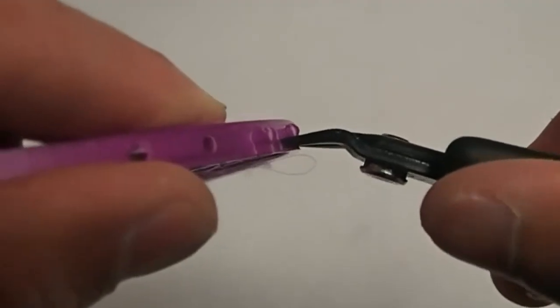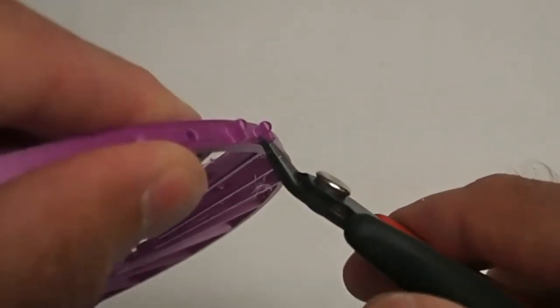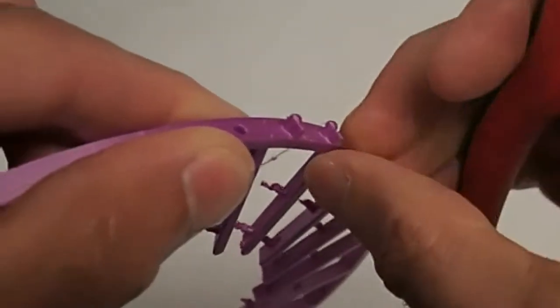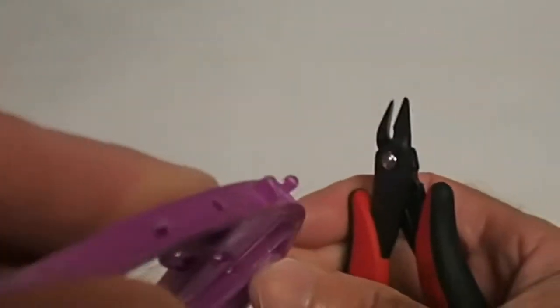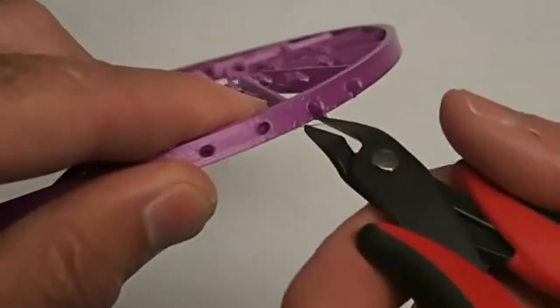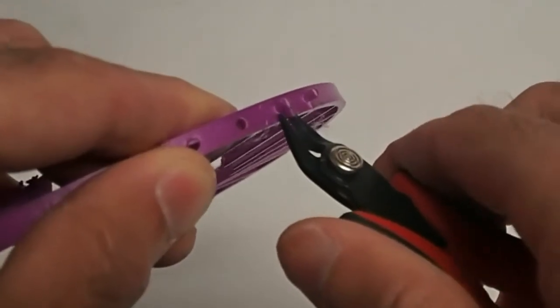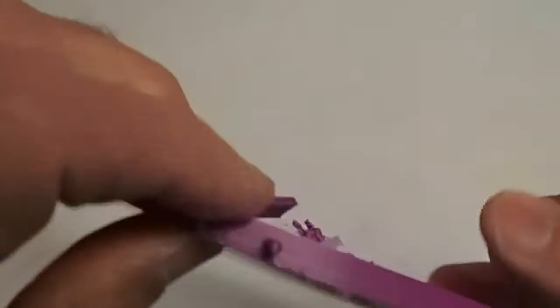If you snip it there, and then snip it there, and then that little piece comes off right there. See that? So then you get the ball like it's supposed to look. So you've got to trim those off and trim that off. Okay, so that gives you the ball like it's supposed to look.